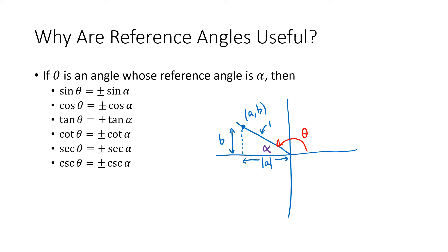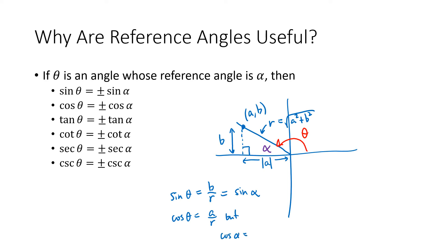The hypotenuse of this triangle is still r — the square root of a squared plus b squared — because even though a is negative, a squared gets rid of that negative. The only difference between the right triangle approach and the terminal side approach is that the x-value happens to be negative. So the sine of theta is b over r, which is the same as sine of alpha. But the cosine of theta is a over r, while cosine of alpha is the absolute value of a over r.